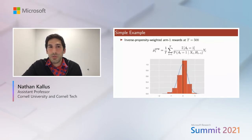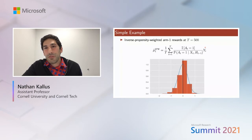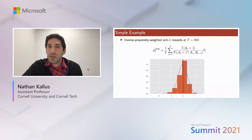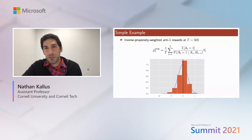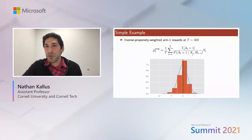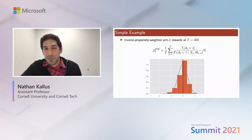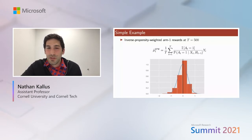To fix this bias, we can use importance sampling or inverse propensity weighting: we average outcomes among individuals treated with arm one, upweighted by the inverse probability of being treated with arm one, conditioning on both context and history since we're in an adaptive setting. This actually fixes the bias — our estimates are now unbiased — but at the same time they don't look very normal. They have fat tails and appear somewhat skewed.